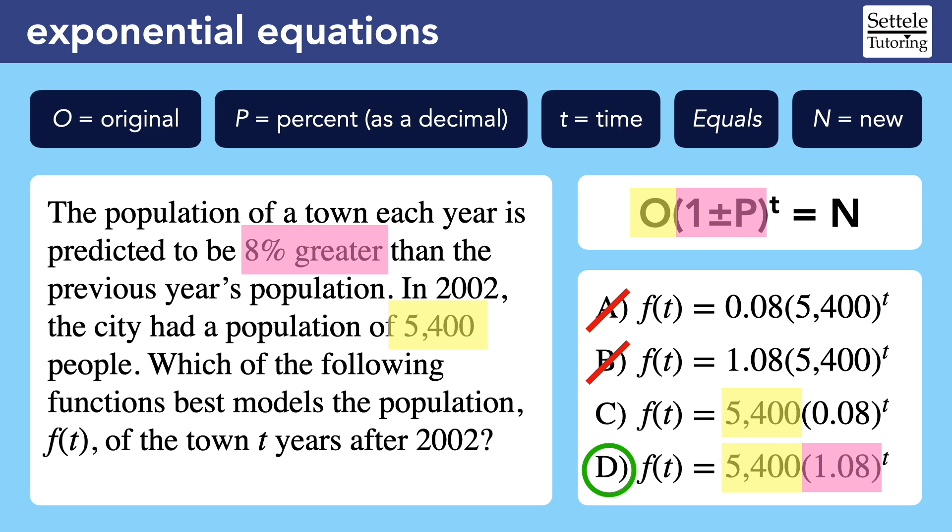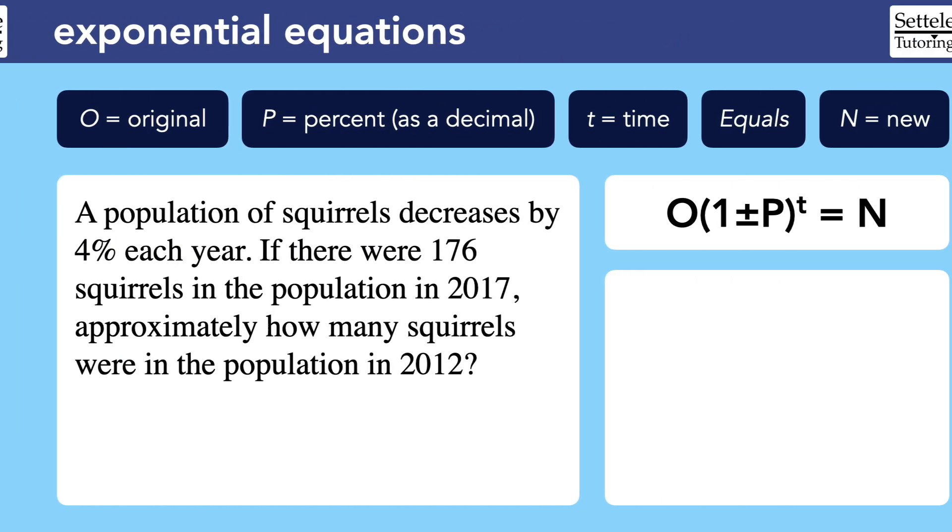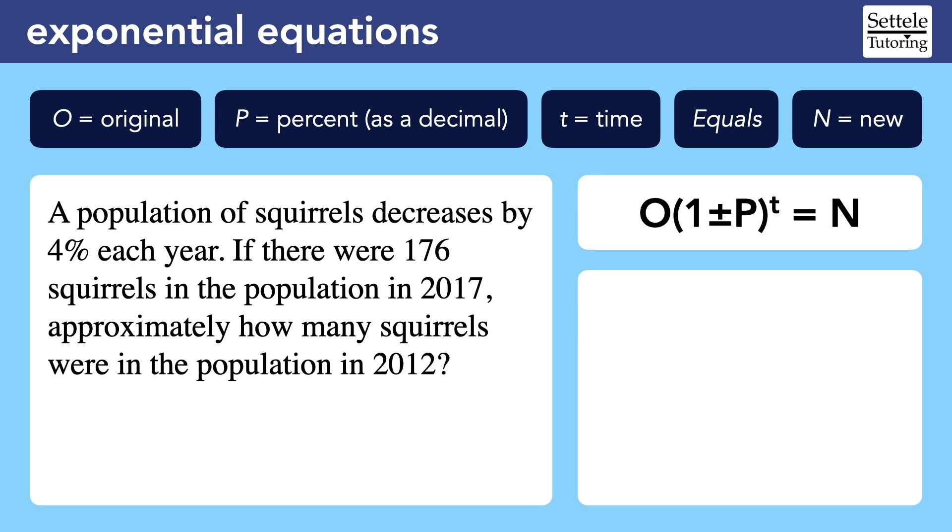Let's look at a question where we need to build our equation from scratch. A population of squirrels decreases by 4% each year. If there were 176 squirrels in the population in 2017, approximately how many squirrels were in the population in 2012? The first thing I notice is the percentage, which is now described as a decrease. That means we'll need to subtract 4% as a decimal from 1 in the parentheses.